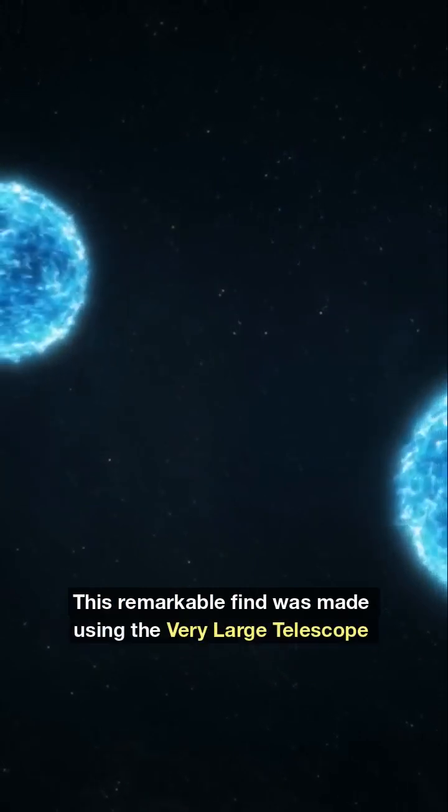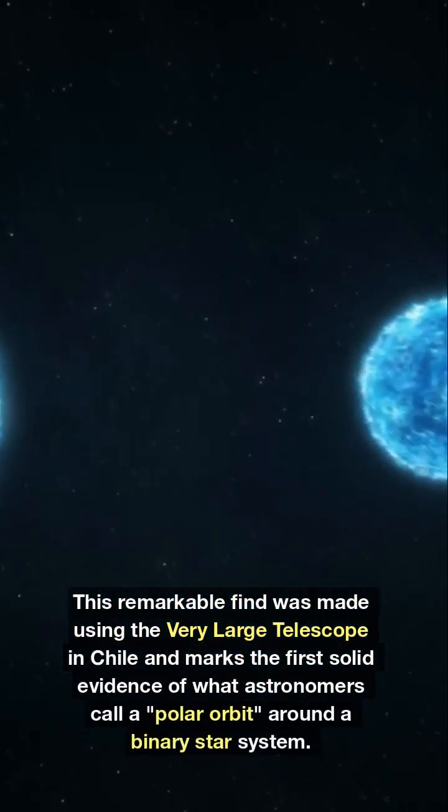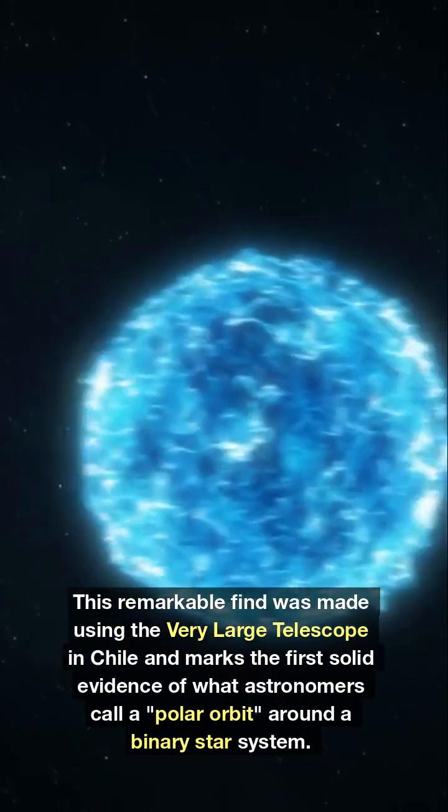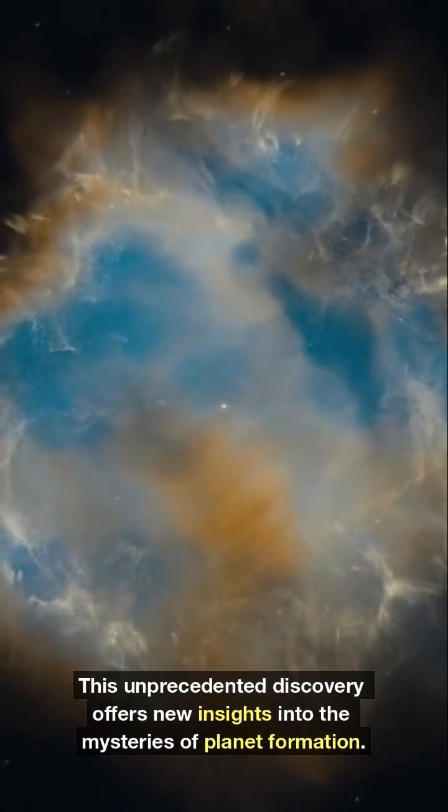This remarkable find was made using the Very Large Telescope in Chile and marks the first solid evidence of what astronomers call a polar orbit around a binary star system. This unprecedented discovery offers new insights into the mysteries of planet formation.